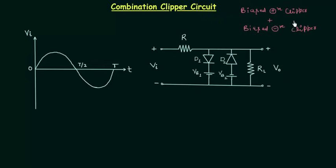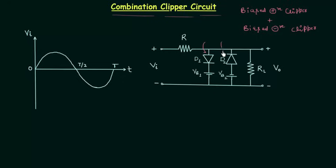When we have a biased positive clipper and biased negative clipper in the same clipper circuit, we call it a combination clipper circuit. This is an example of a combination clipper circuit, where this branch is acting as a biased positive clipper and this branch is acting as a biased negative clipper.